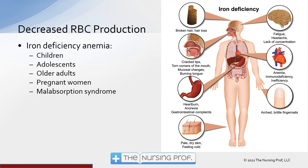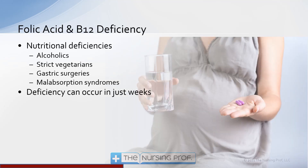Iron deficiency anemia also occurs in older adults, pregnant women, and in malabsorption syndromes where the patient may not be absorbing iron even though they're taking it in through their diet. Folic acid and B12 deficiency similarly result from nutritional deficits — this can happen in strict vegetarians, after gastric surgeries where absorption is reduced, in patients who are alcoholics, and in malabsorption syndromes.